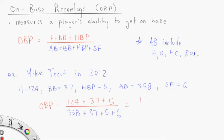Sorry, I'm using a calculator. All divided by 358, plus 37, plus 5, plus 6. That's 406. So 166 divided by 406, and we round that to three decimal places, what we get is 0.409.